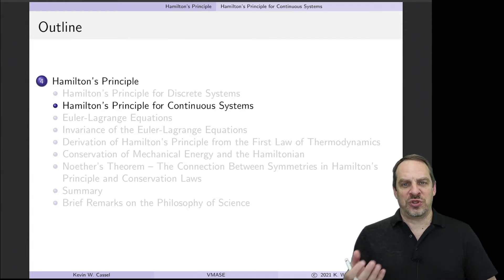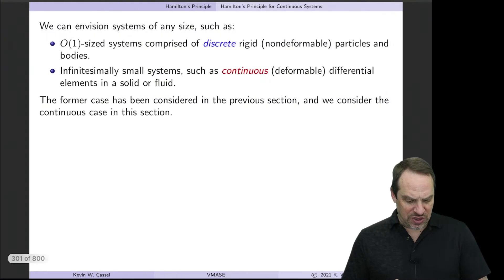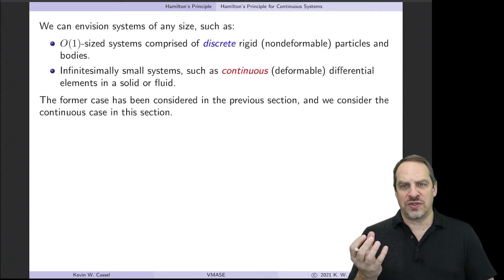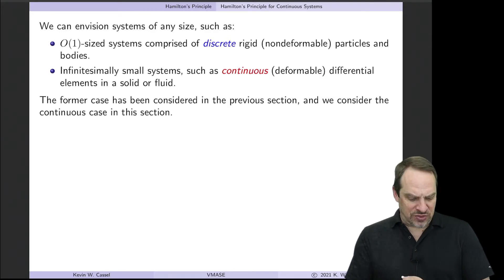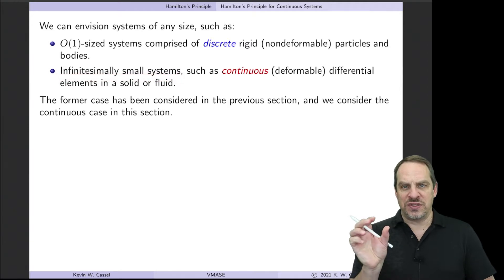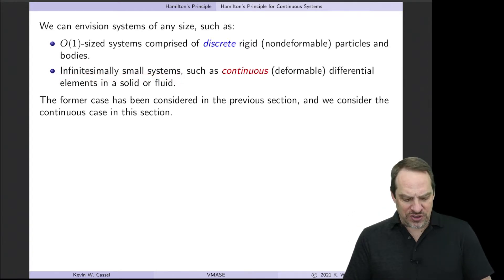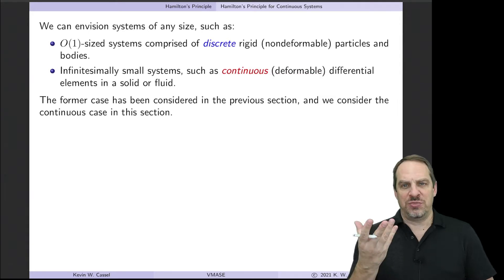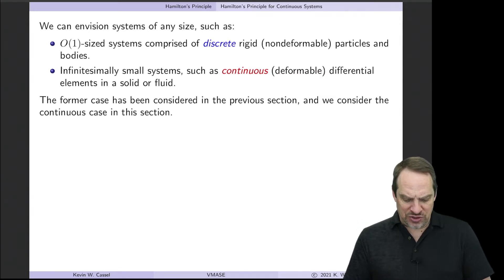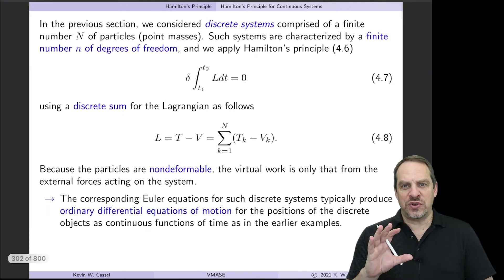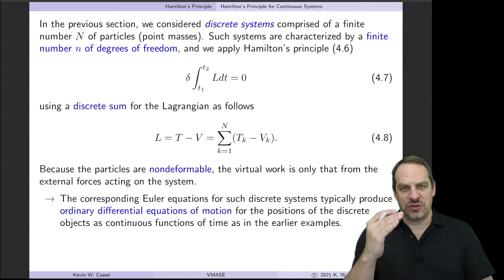Now we would like to look at how Hamilton's principle can be applied to continuous systems. For discrete systems, we considered rigid, therefore non-deformable particles, and they were of order one size. But there's no reason why we could not apply the same principle, Hamilton's principle, to systems involving infinitesimally small pieces of solids or fluids. So now these are continuous systems. They're deformable, so they can be compressed and expanded. And we'll be considering differential elements of, like I said, say a solid or a fluid. So let's first, in this one slide, remind ourselves of the developments applied to discrete systems. And I'll emphasize some of these aspects along the way that will then be different for continuous systems.